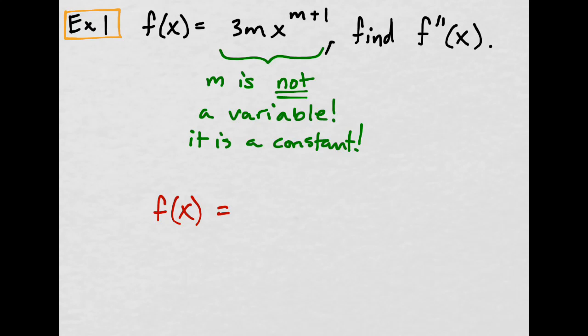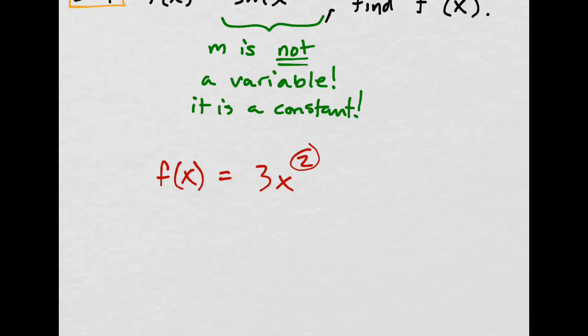If you have f of x equals 3x squared, here this is a constant, this is the variable. When I use the power rule, I only pay attention to the exponent of the variable. I don't move the 1 down and then subtract, so it's like 1 times 3 to the 0. I don't do that. No way. What I am supposed to do is just take the 2, multiply it by the 3. That would give you 6, and then 2 minus 1 is just 1. So this is just 6x.